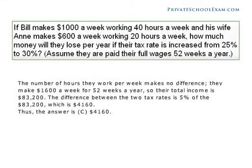If Bill makes $1,000 a week working 40 hours a week, and his wife Anne makes $600 a week working 20 hours a week, how much money will they lose per year if their tax rate is increased from 25% to 30%? Assume they are paid their full wages 52 weeks a year. The number of hours they work per week makes no difference. They make $1,600 a week for 52 weeks a year, so their total income is $83,200. The difference between the two tax rates is 5% of $83,200, which is $4,160. Thus, the answer is C, $4,160.